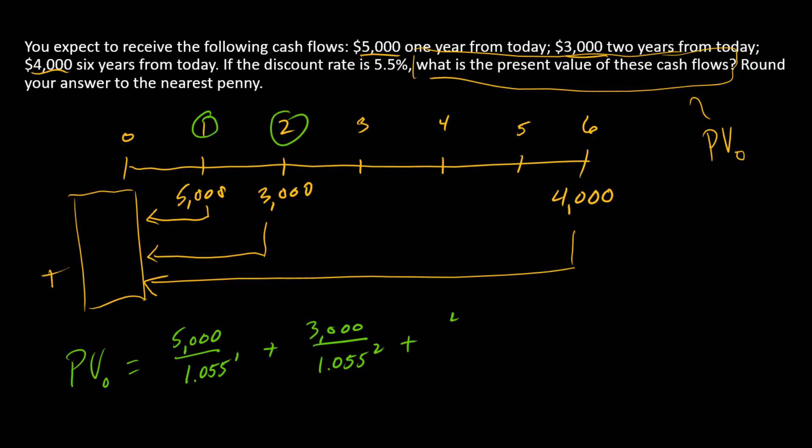And then the third cash flow, when we discount it, has a denominator of six since it occurs in year six. And so we can sum those up and we'll get the answer, which is $10,335.68.